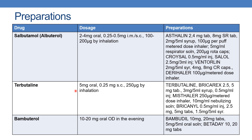The next drug is terbutaline. The dose is 5 mg oral, or 0.25 mg subcutaneous, and 250 mcg by inhalation. The preparations are Bricarix, available as 2.5 and 5 mg tablets, 3 mg per 5 ml syrup, and 0.5 mg per ml injection. Mistalar is available as 250 mcg per metered dose inhaler and 10 mg per ml nebulizing solution. Bricanide is available as 0.5 mg per ml injection, 2.5 mg and 5 mg tablets, and 1.5 mg per 5 ml syrup.